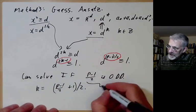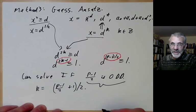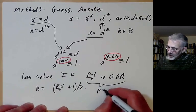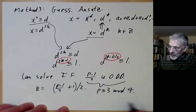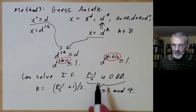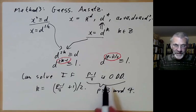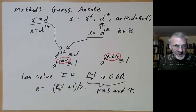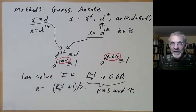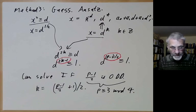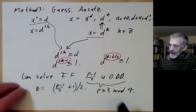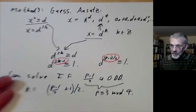If p ≡ 1 mod 4, this approach fails. So we've managed to find square roots very quickly for half of all possible primes — those with p ≡ 3 mod 4. Now, what if p ≡ 1 mod 4? What can we do? Let's play around a bit and see what we can come up with.